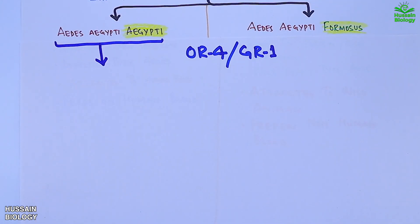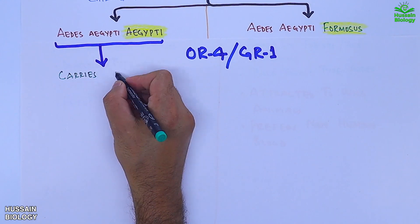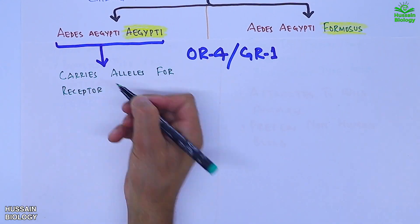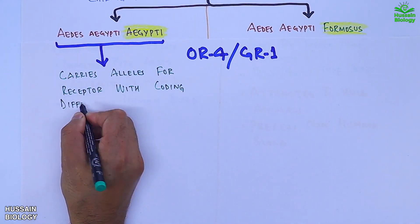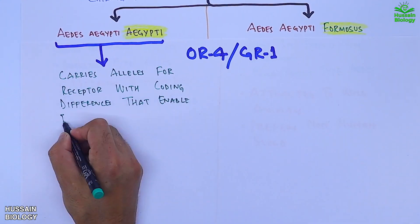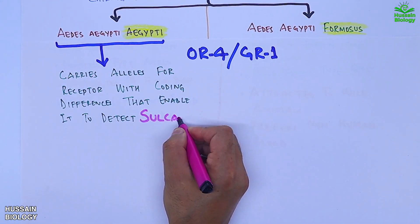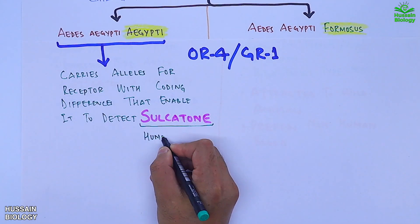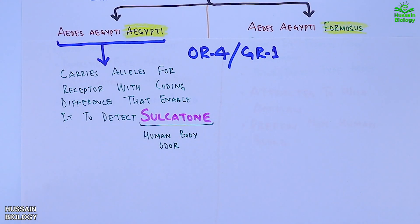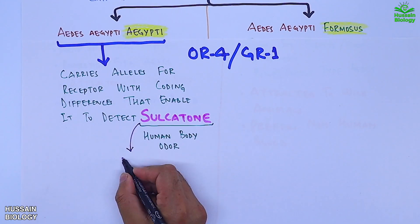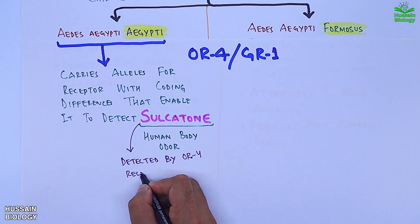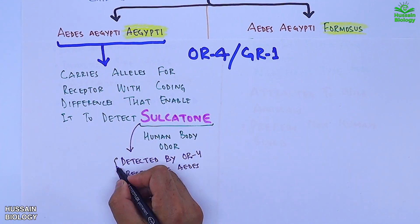In the case of the domestic type Aedes, it carries alleles for receptors with coding differences that enable it to detect sulcatone, which is a chemical found in human body odor and is detected by the OR4 receptor of Aedes.